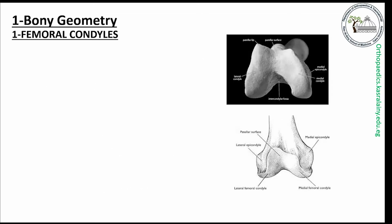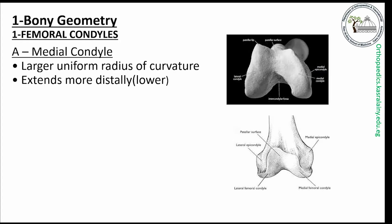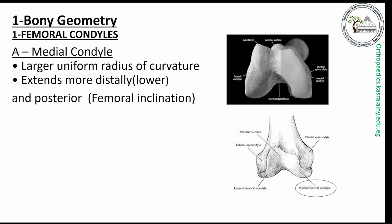Starting with the bone geometry of the femoral condyles, the medial condyle has a large uniform radius of curvature, larger than the lateral condyle, that extends to lower distal and posterior levels. This extension is responsible for the femoral inclination.